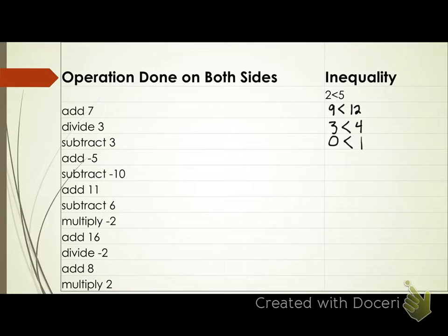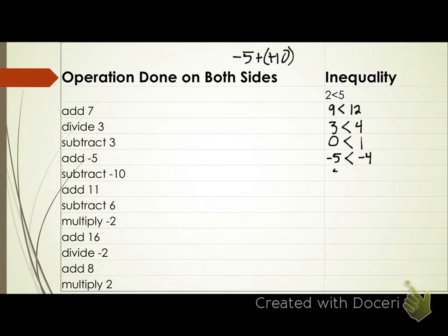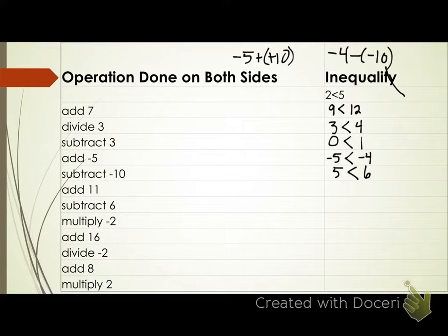Add negative five. Zero plus negative five gives me negative five. One plus negative five gives me negative four. Inequality symbol? Still less than. My inequality symbol has stayed the same throughout this whole process. Now subtract negative ten. Negative five minus negative ten — two negatives right next to each other makes a positive, so negative five plus ten gives me five. Negative four minus negative ten gives me six. Inequality symbol? Less than. Five is less than six. Has my symbol changed at all? No, still the same.